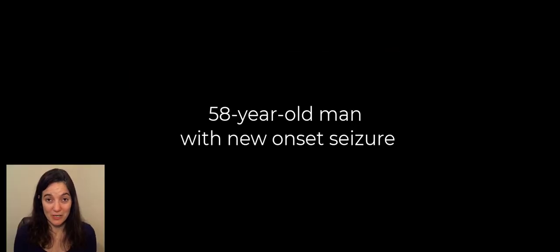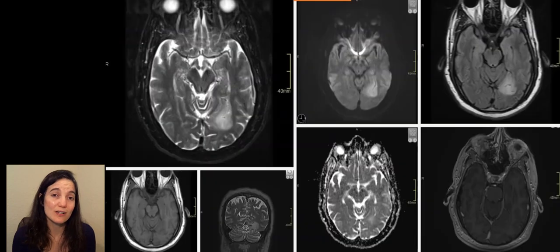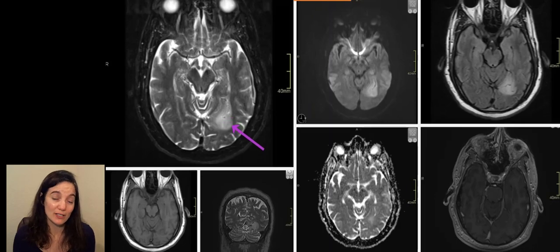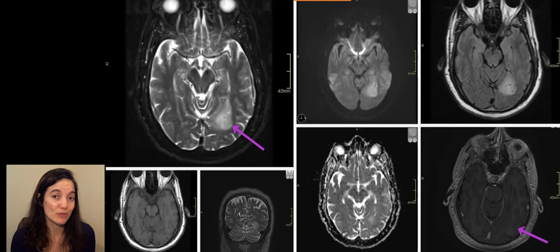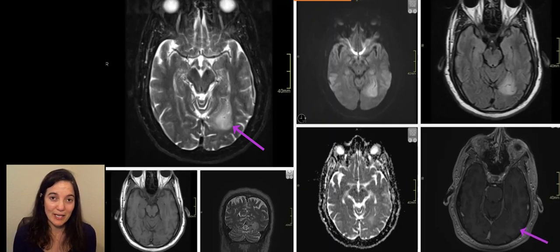In this video we're going to be talking about a 58-year-old man who presented with new onset seizure activity. On MRI studies, an ill-defined mass was found in the parietal occipital region, and on T1 post-contrast there was no enhancement. The surgeons did a biopsy. Let's see what it looks like under the microscope.